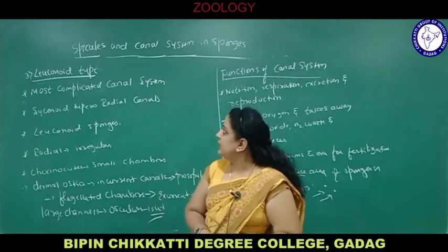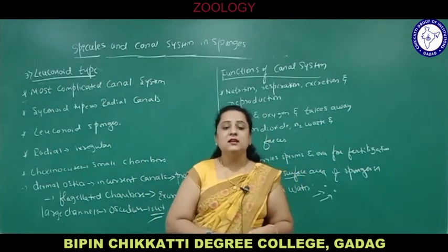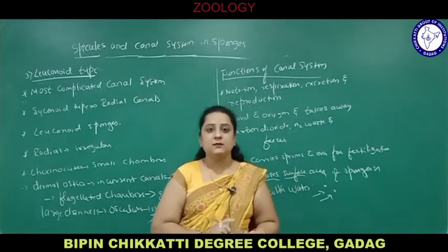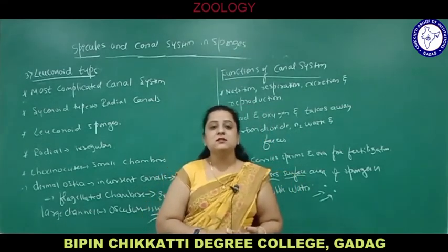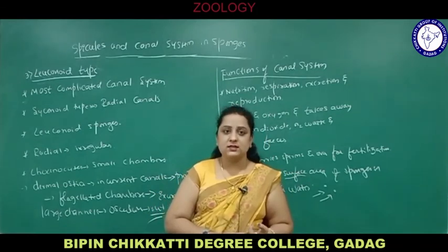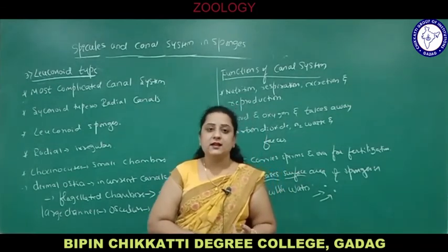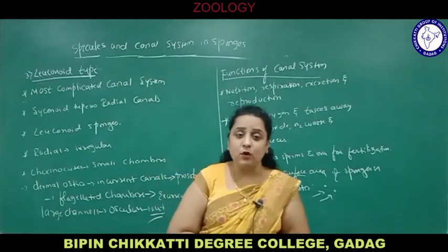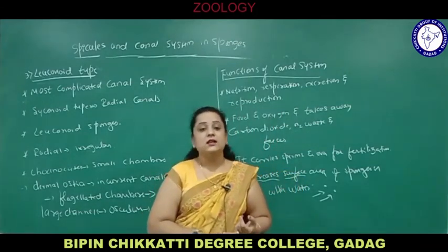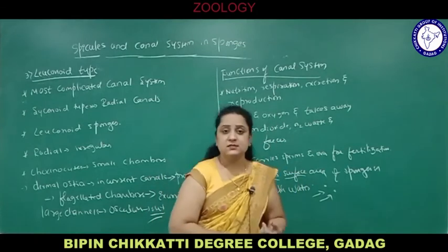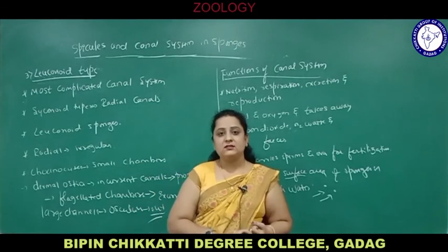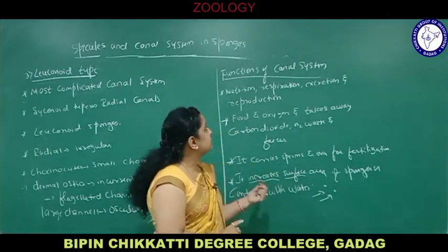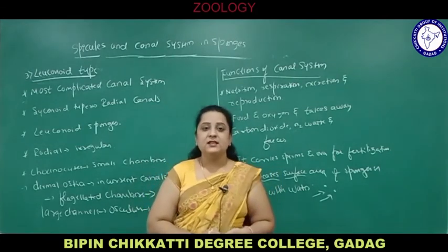In this session we studied spicules and canal system in sponges: the meaning of spicules, what they are made of, types of spicules — megascleres (monaxons, tetraaxons, triaxons, polyaxons, spheres) and microscleres — then the canal system with three types: asconoid, syconoid, and leuconoid, and finally the functions of canal system. In the next session we will discuss the economic importance of sponges. Thank you.